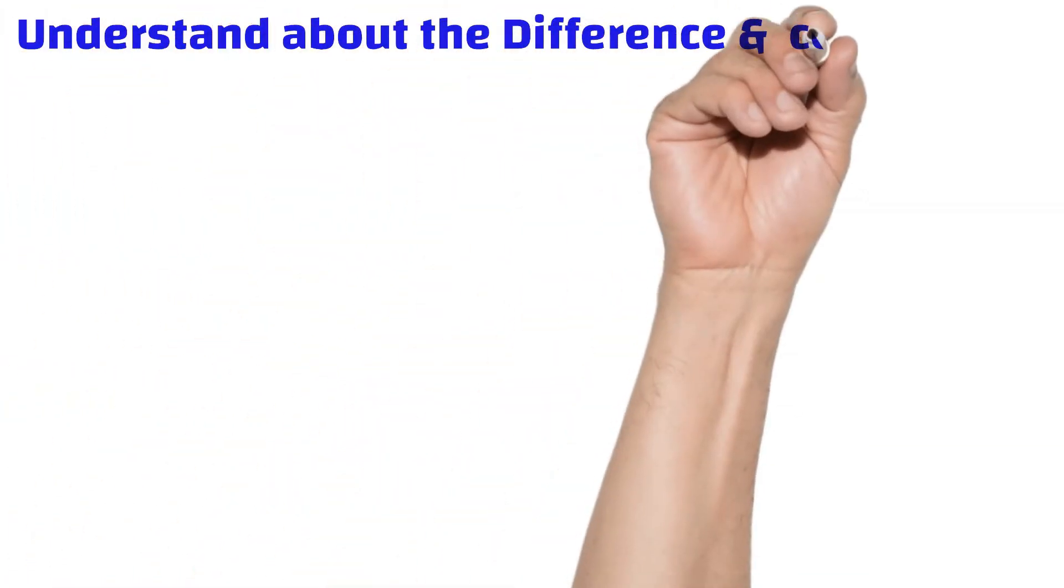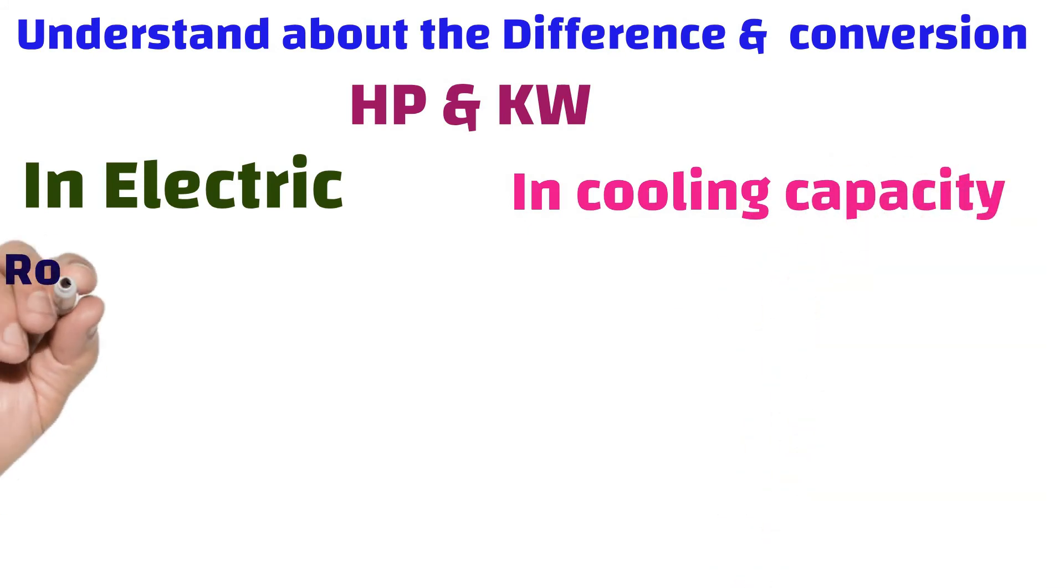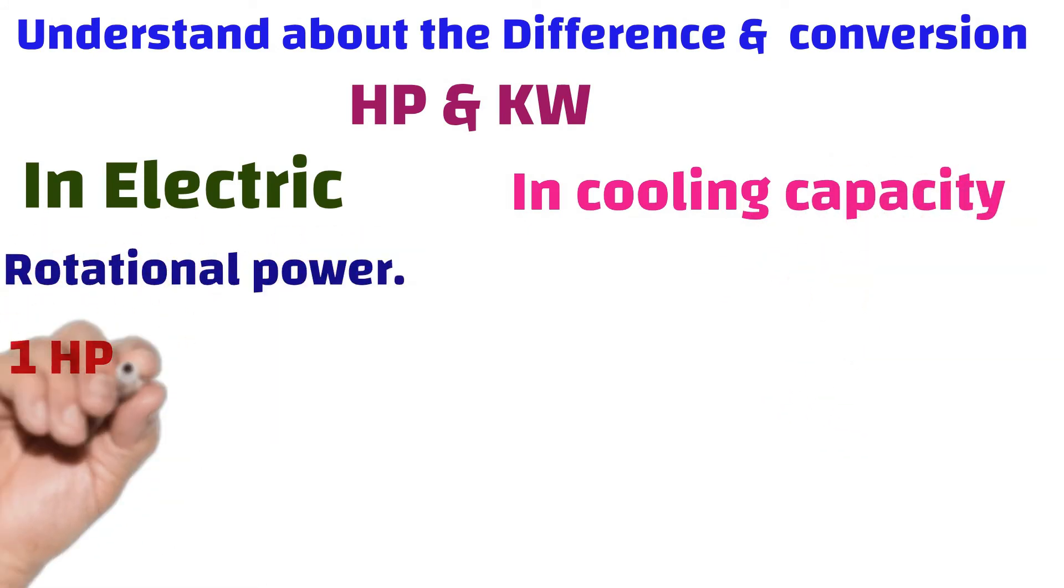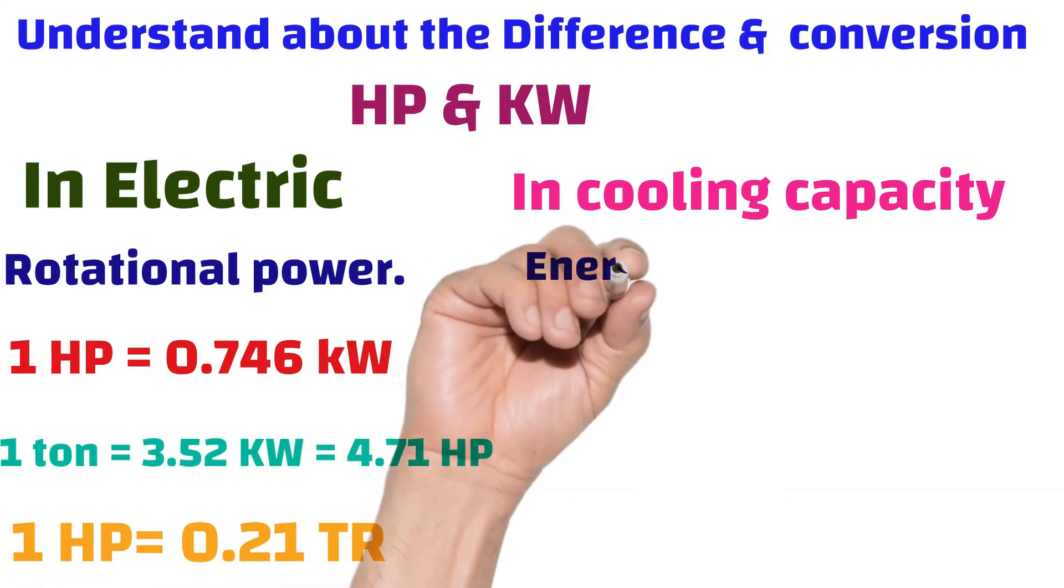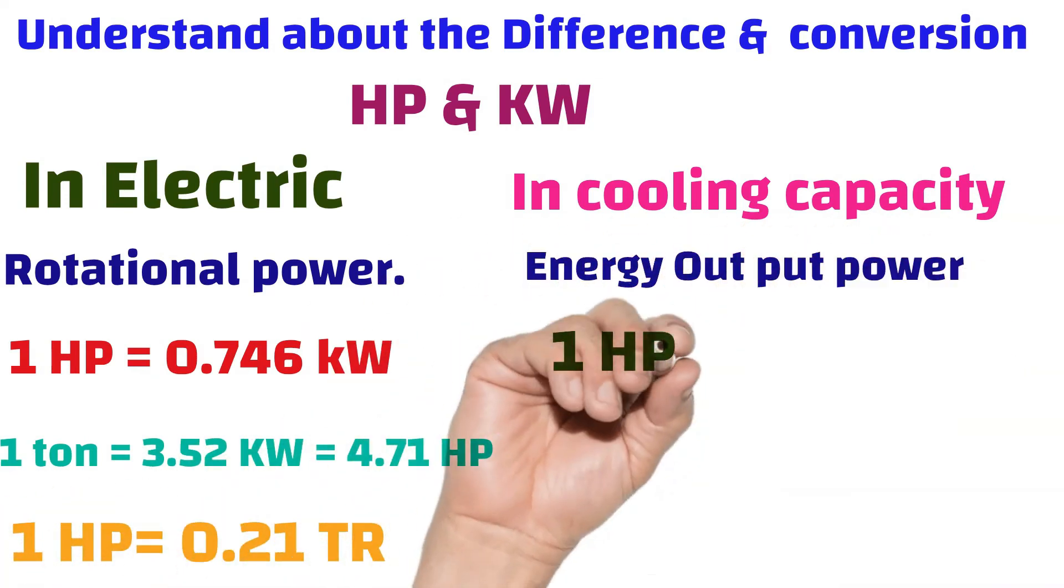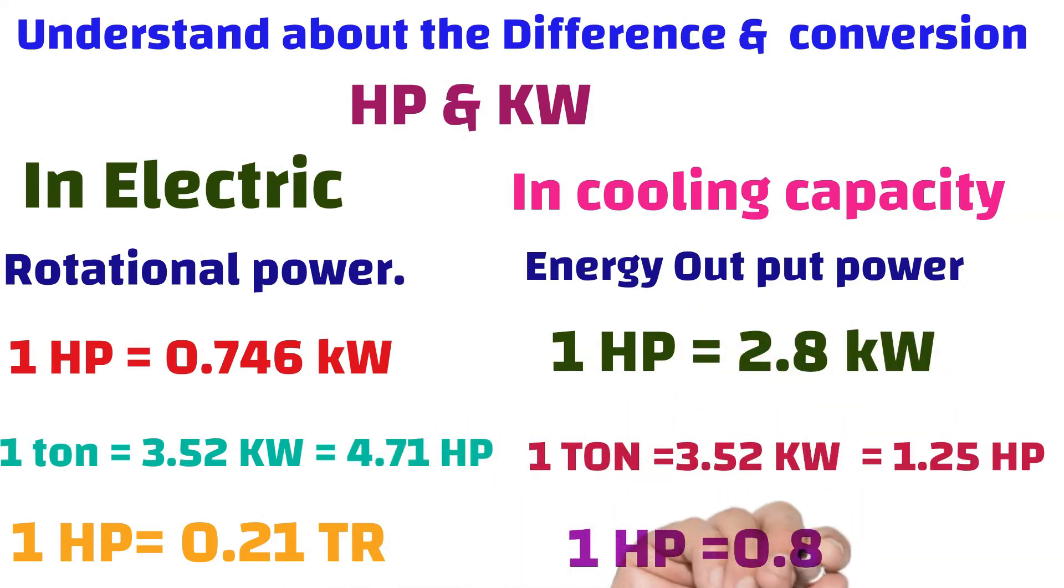Understand about the difference between the electrical horsepower and kilowatts with cooling capacity horsepower and kilowatts. Electrical horsepower is a rotational power. Cooling capacity horsepower is an energy output power. 1 horsepower in electric is 0.746 kilowatts.